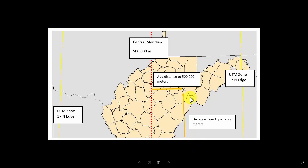In the southern hemisphere, the equator is commonly assigned a value of 10 million meters, and you subtract from this as you move south. So, the northing is a measure of your distance from the equator, and is defined differently in the north and south hemispheres.